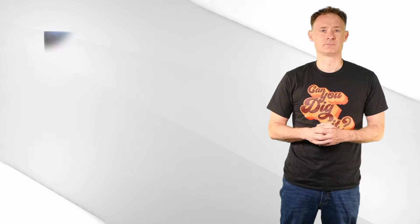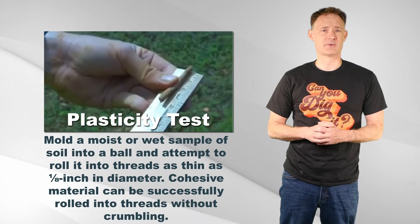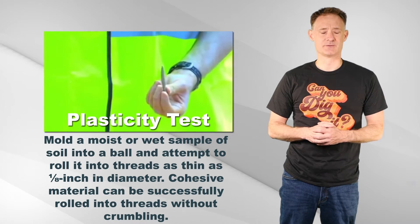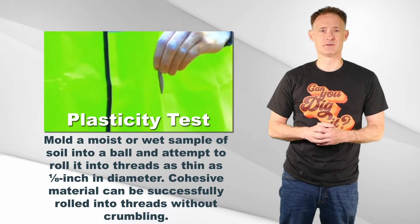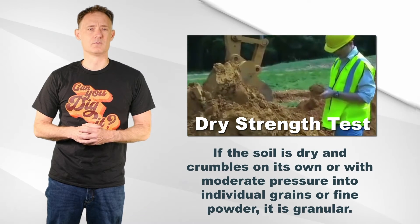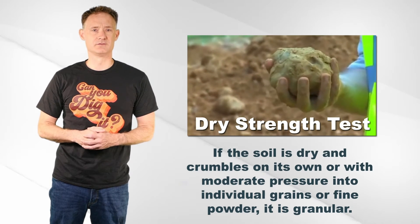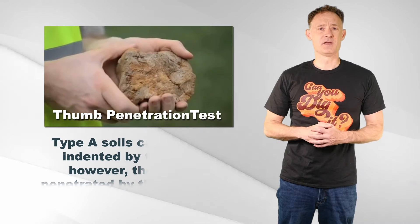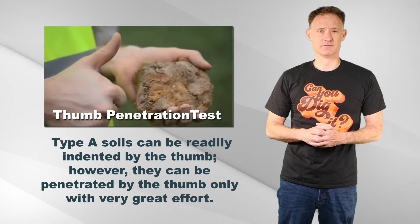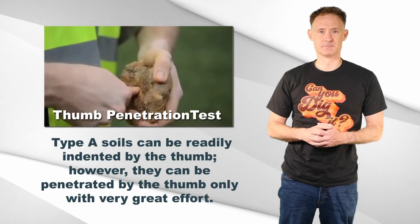There are many different types of physical or manual tests. The plasticity test involves rolling a moist sample into a ball and then rolling it into a thread of about one-eighth of an inch in diameter. If it holds its shape, it is a cohesive soil. The dry strength test involves seeing if the soil crumbles on its own or with moderate pressure — if it breaks apart, it is a granular soil. The thumb penetration test involves pressing your thumb into a sample of the soil; Type A soils can only be penetrated with a lot of effort. You can also use other tools such as the pocket penetrometer.